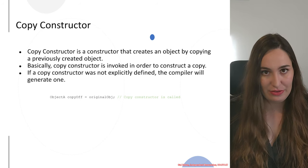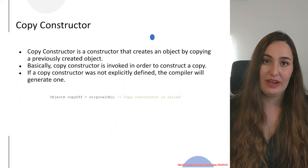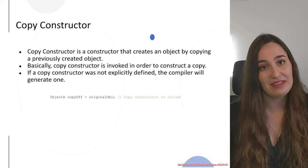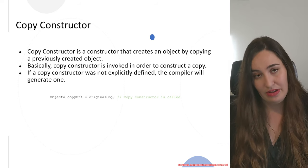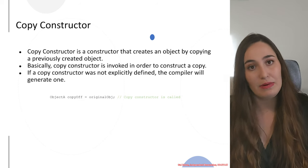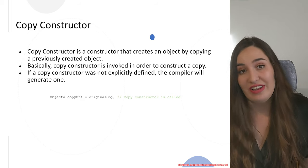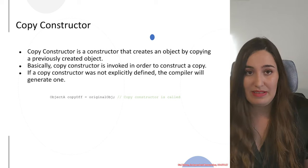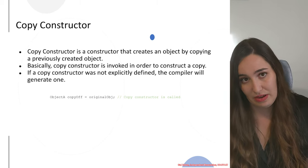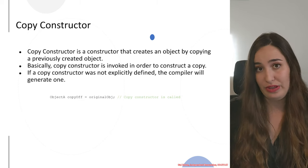Now that we understand how basic constructors look, we also need to understand how a copy constructor looks. Another function you might encounter when reverse engineering C++ binaries is a copy constructor. A copy constructor creates an object by copying a previously created one. This function will be called after you see another basic constructor call. Also, if you as a developer don't explicitly write a copy constructor, the compiler will generate one for you — it is one of the functions the compiler generates regardless of whether you wrote it explicitly or not.